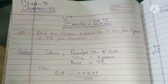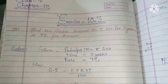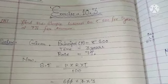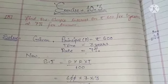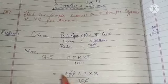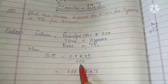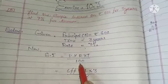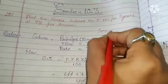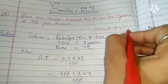Good morning students. In this video I will start Exercise 10.3, Chapter 10, Class 7th. In this exercise we will start simple interest questions. The formula for simple interest is SI equals to PRT upon 100, and the second formula for finding amount is Amount equals to Principal plus SI.